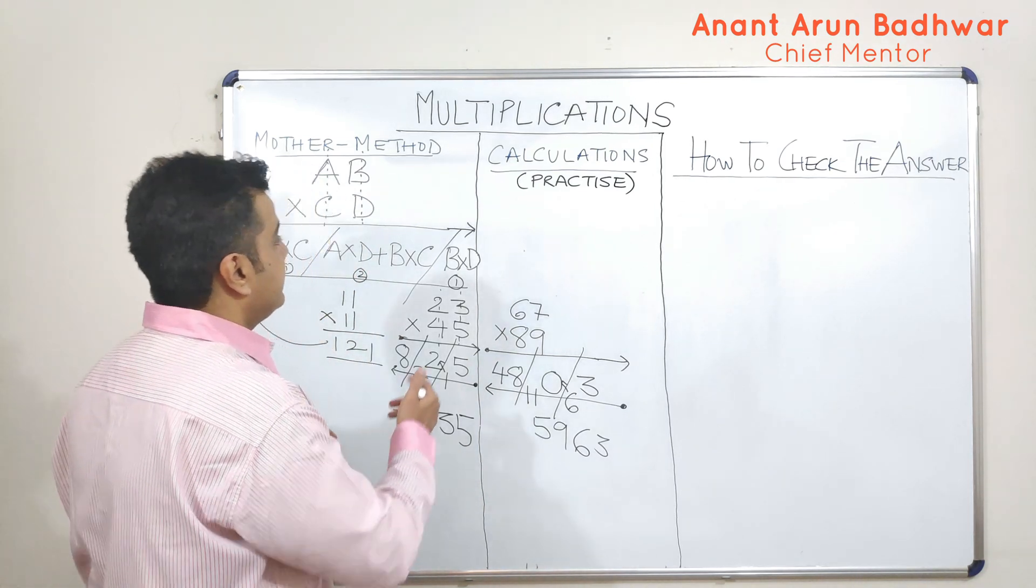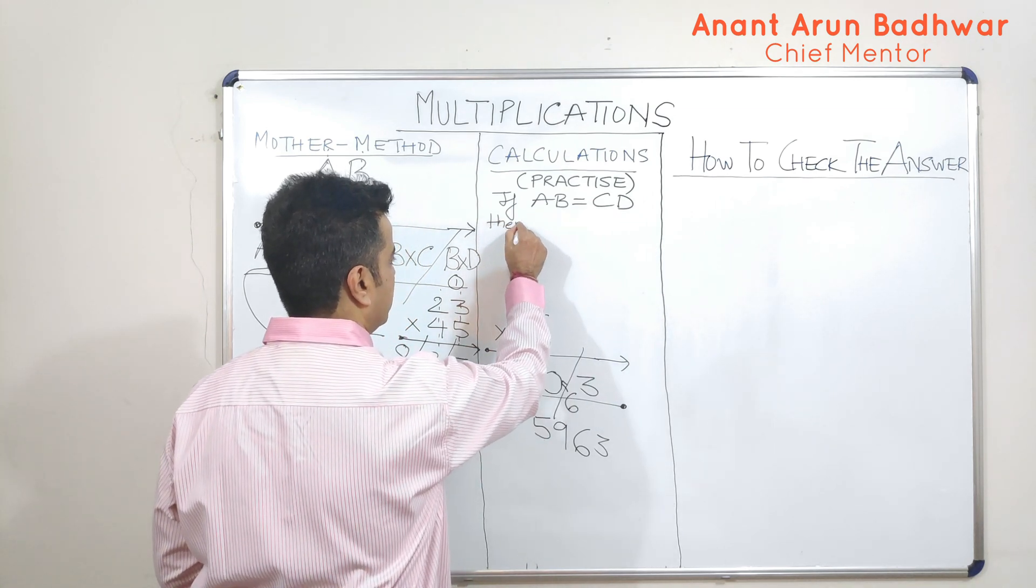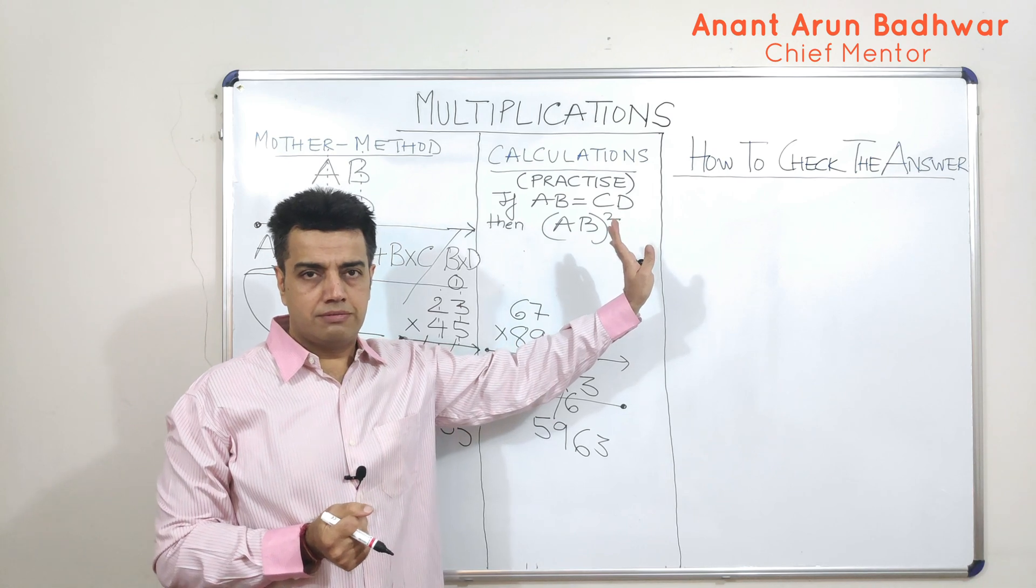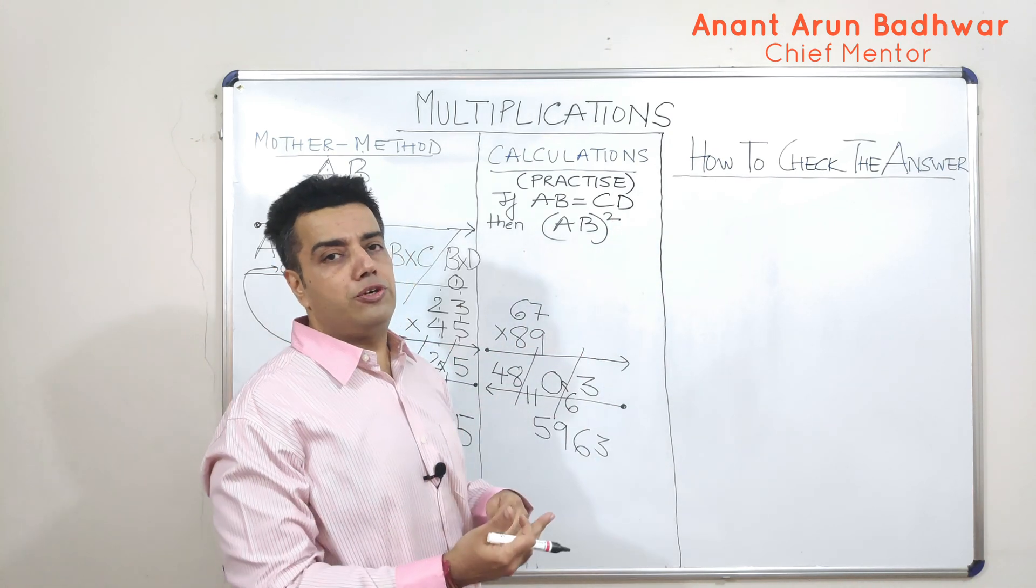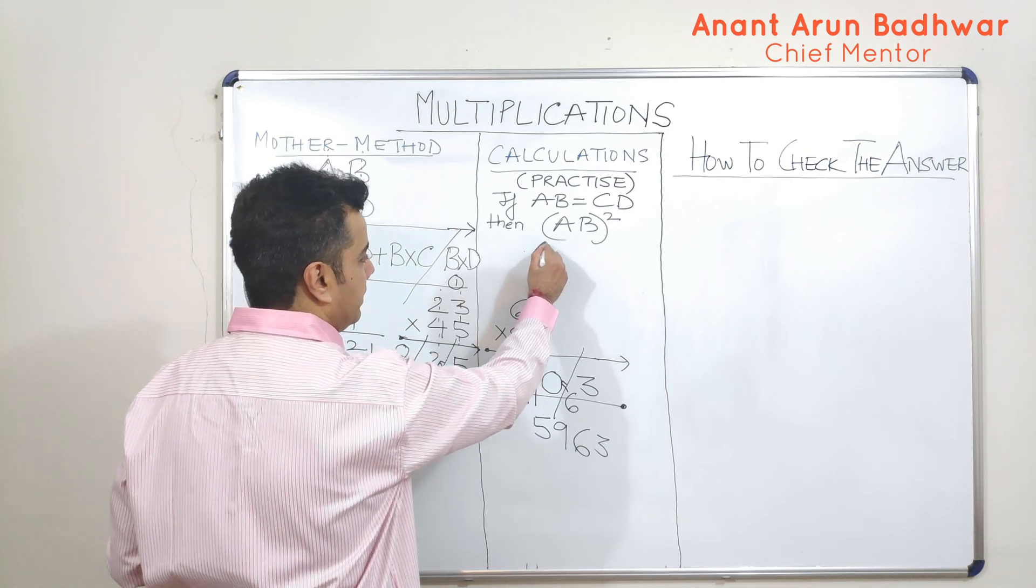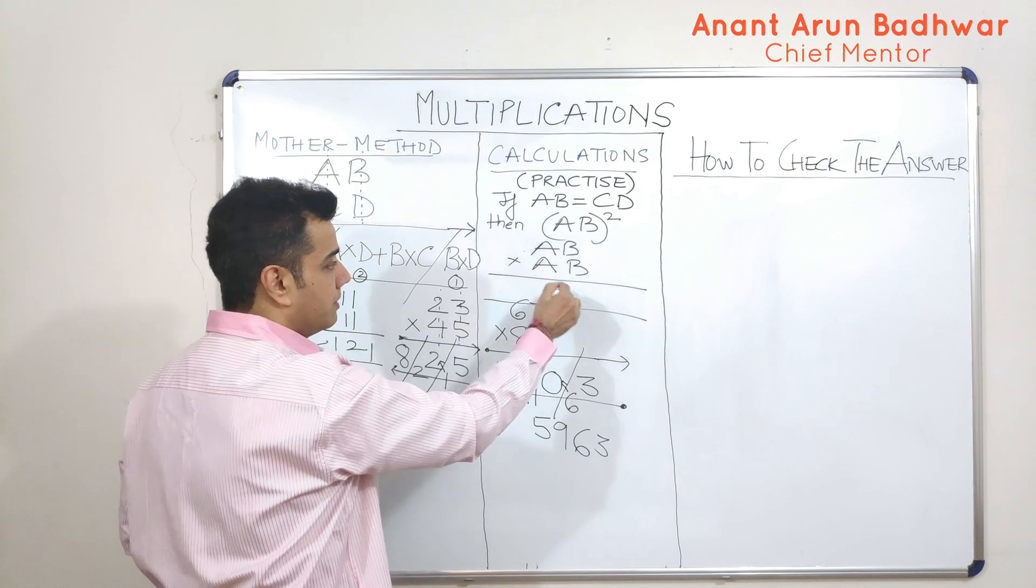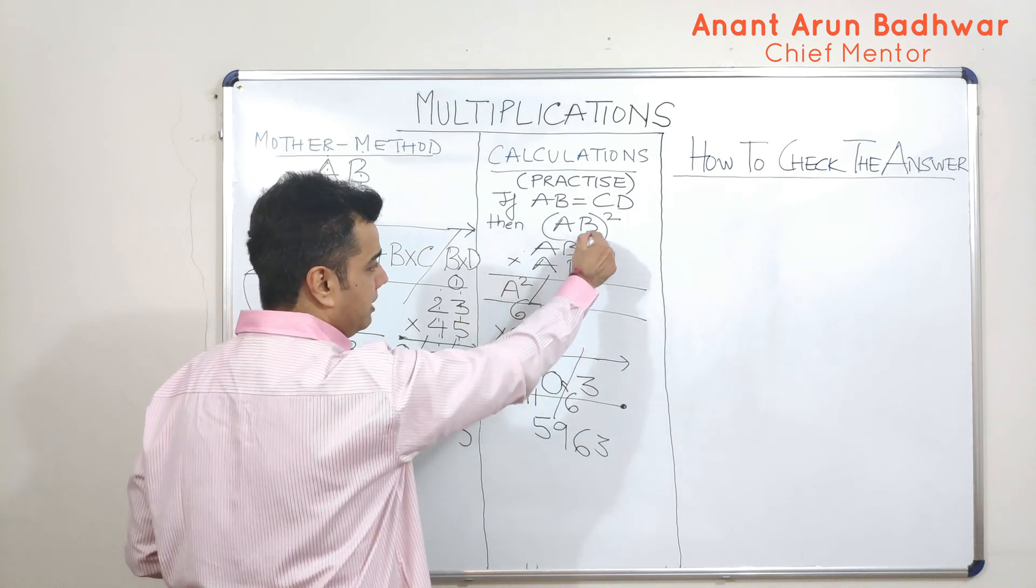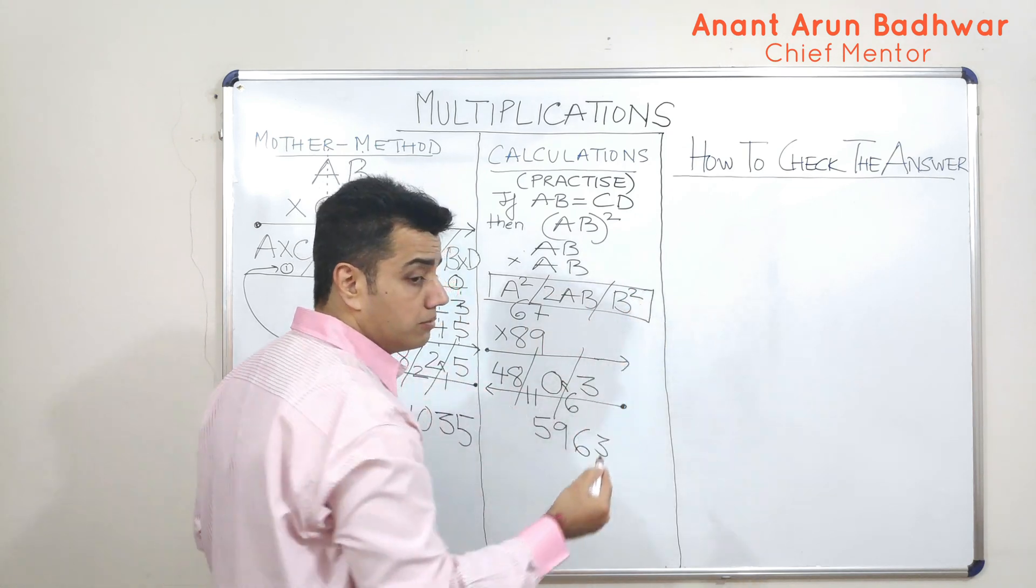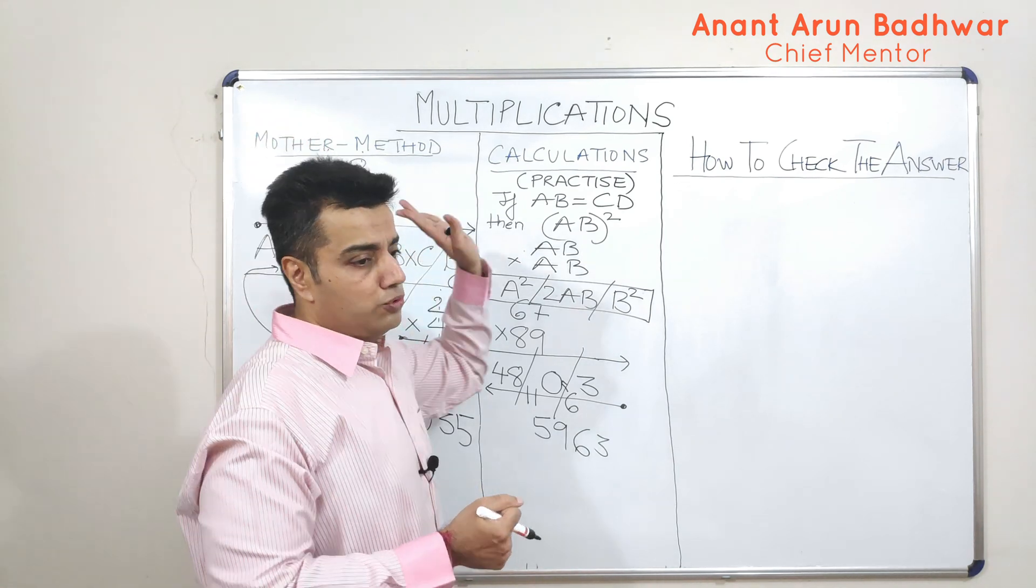Now, if I say, if AB becomes equal to CD, then what am I doing? I am basically finding out the square of a number. That means the same mother method can be used to find out the squares. And if you relate, my very first video on calculations was how to find out the squares. So, now what is AB square? AB square is nothing but AB into AB. Using the same logic, there are two columns, right? So, A into A makes it A square followed by AB plus AB, which is 2AB, followed by B square. This is what we had done in the earlier video. So, can I say, that if I know this method, the same method can be used to find out the squares? Yes.